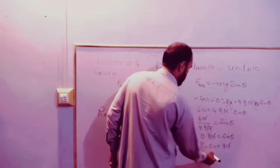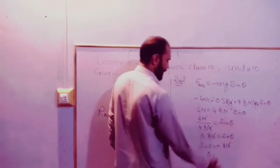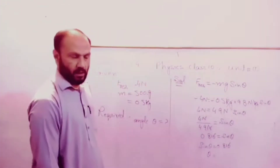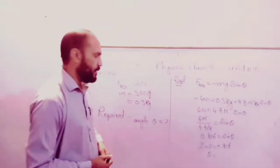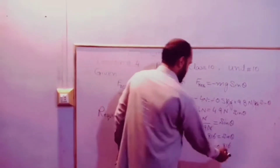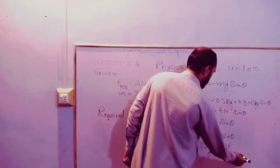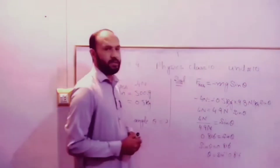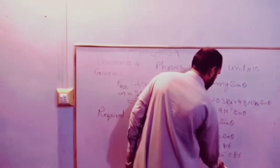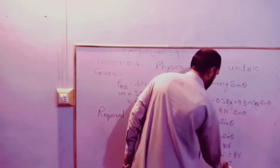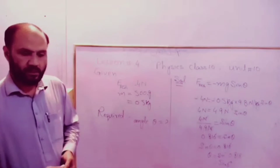Using sine inverse on the calculator: sine inverse of 0.816 gives theta equal to 54.6 degrees. 54.6 degrees is exactly the same angle, as confirmed by the scientific calculator.